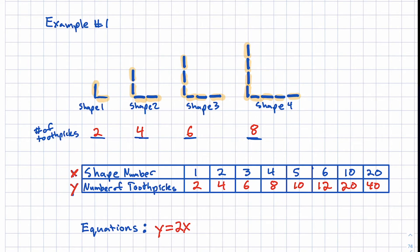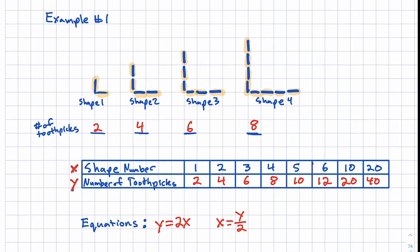If we wanted to give another way, we could also put it in terms of X. We would take the Y number and divide it by two, so X equals Y divided by two. Usually it's more common to see Y equals, but that could totally work. Let's look at another example.